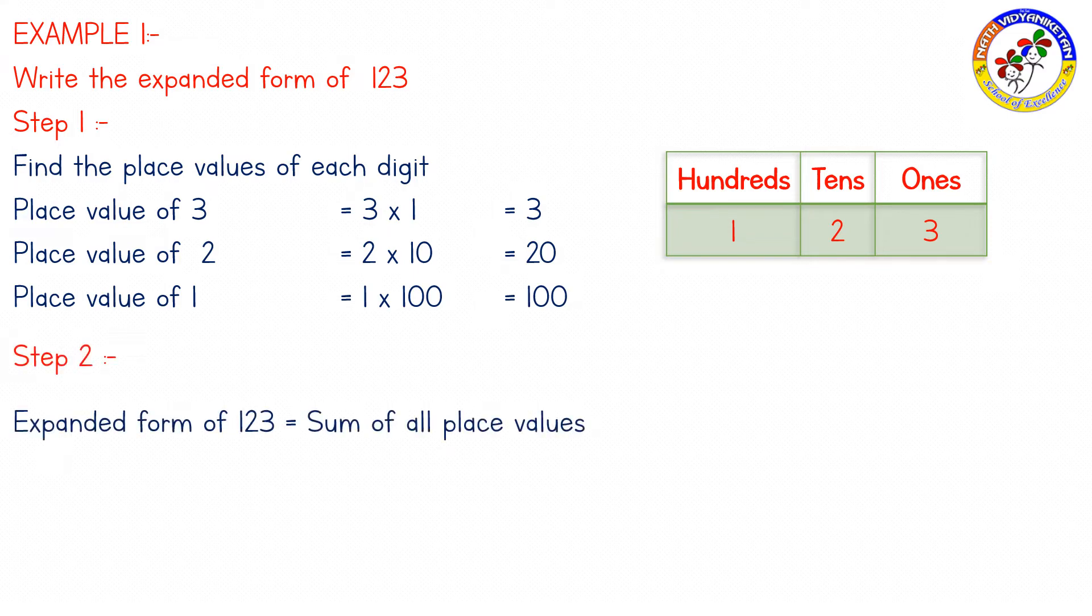Step 2: Expanded form of 123 is sum of all place values. The definition is sum of all place values, so 100 plus 20 plus 3. Therefore, the expanded form of 123 is 100 plus 20 plus 3.